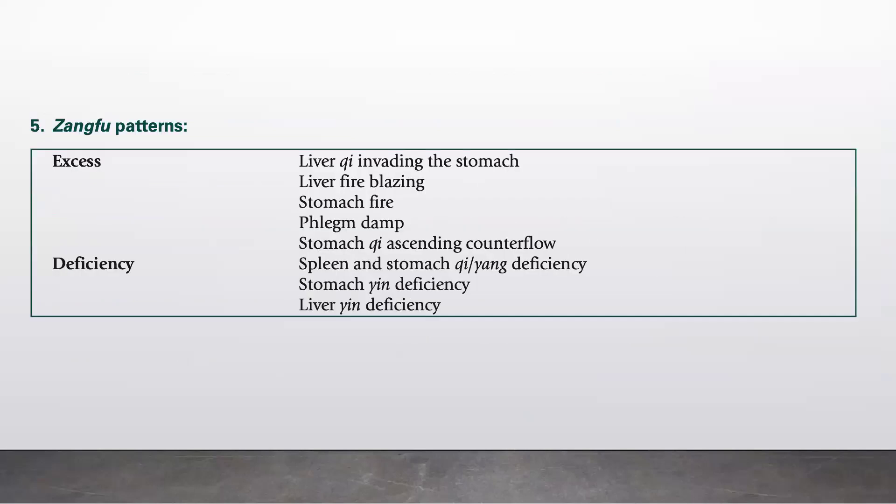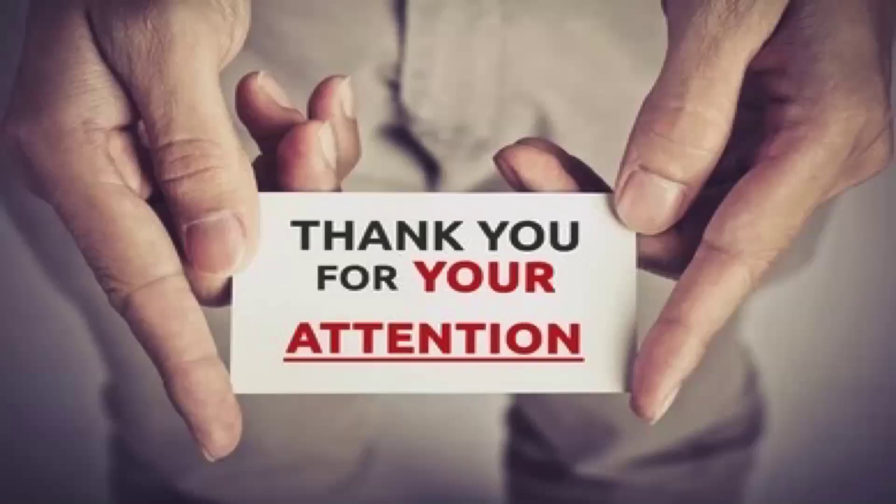Zenfu patterns for hiatus hernia and acid reflux: excess patterns include liver chi invading the stomach, liver fire blazing, stomach fire, phlegm damp, and stomach chi ascending counter flow. Deficiency patterns are spleen and stomach chi or yang deficiency, stomach yin deficiency, and liver yin deficiency. Thank you for your attention.